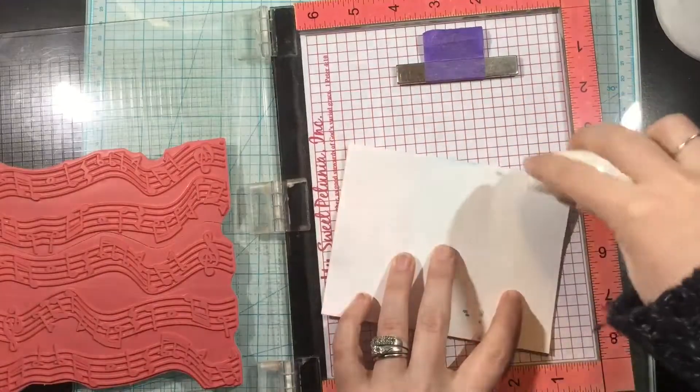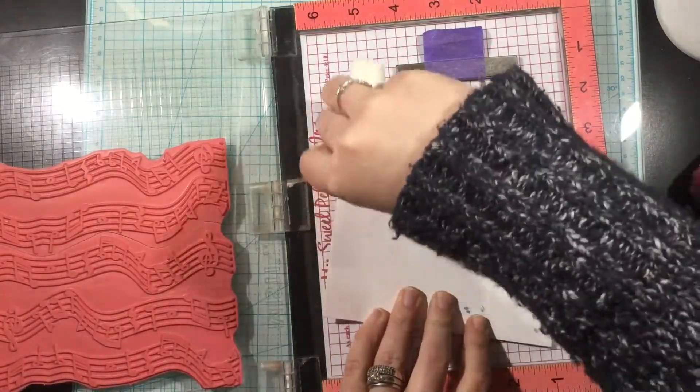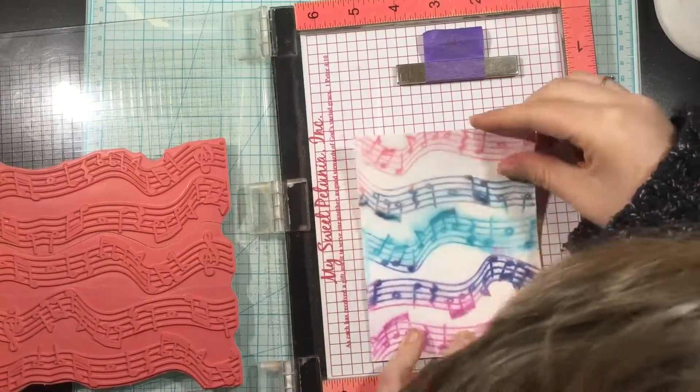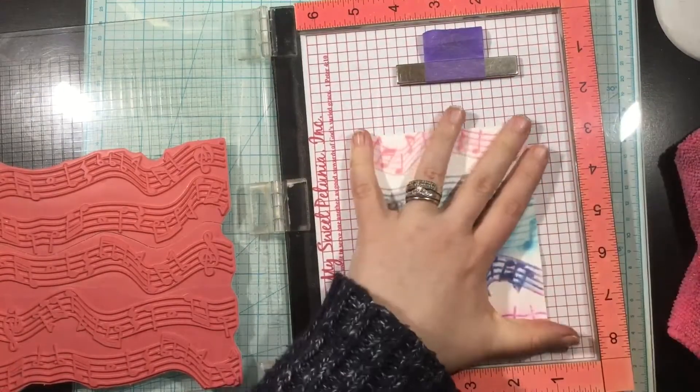I dried this really well with my heat tool. I'm going to add some more removable adhesive and I'm going to put this right back in my MISTI where I had it the first time.